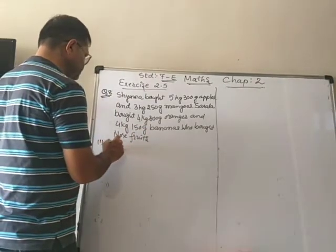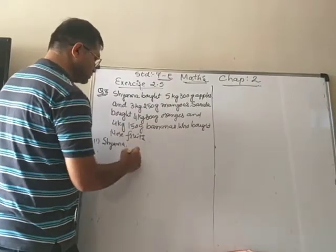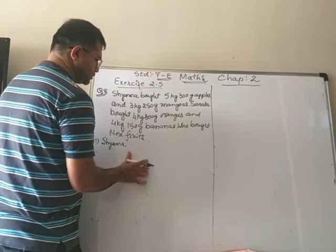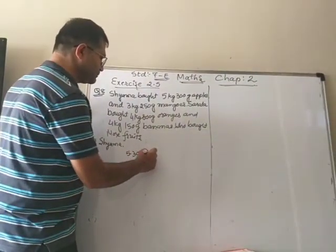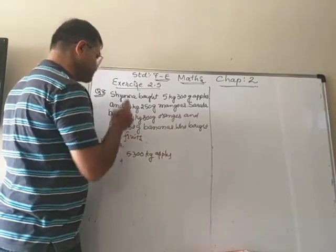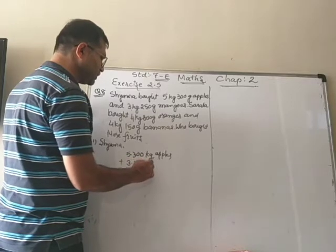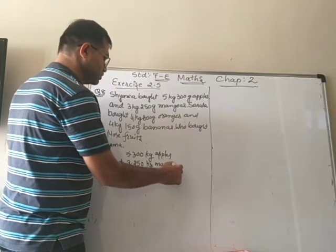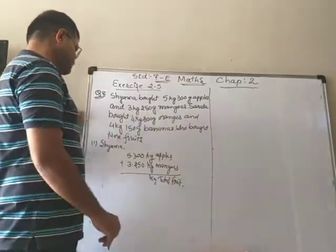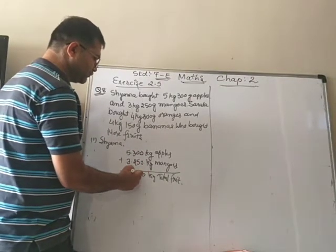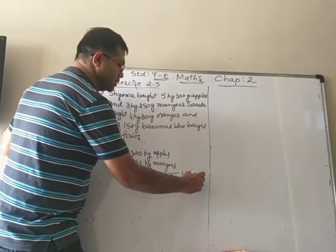First we will find for Syama. 5 kg 300 g means 5.300 kg apples, plus 3 kg 250 g means 3.250 kg mangoes. Adding: 0 plus 0 is 0, 5 plus 2 is 5, wait — 3 plus 2 is 5, and 5 plus 3 is 8. Total fruit bought by Syama is 8.550 kg.